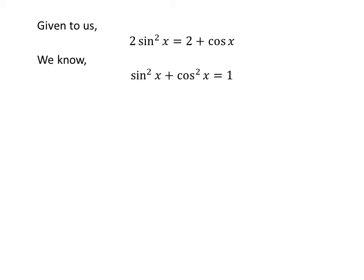We know the famous trigonometry identity: sine squared of x plus cosine squared of x is equal to 1. Let us apply the above identity. In the above equation, we get 2 times (1 minus cosine squared of x) is equal to 2 plus cosine of x.